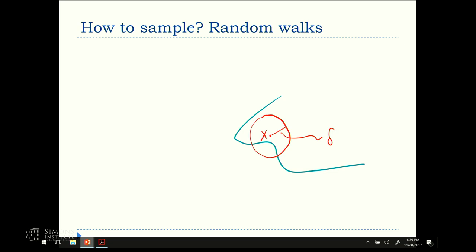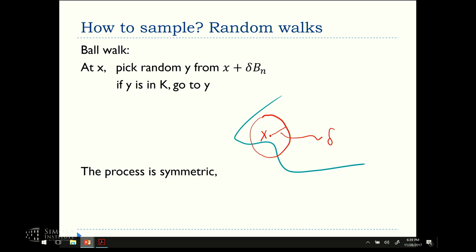So just to build up to this process, how do we sample? We use random walks, and the first one of the nice ones with the essentially complete analysis is the ball walk, which says you're at a current point in the body, you pick a uniform point in a little ball of fixed radius delta, so there's a parameter delta. If the point is in the body, you go there, otherwise you try again. So that's the process. Now it's symmetric, the probability of A to B is the same as B to A. So the stationary distribution is as we want.